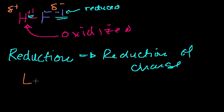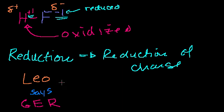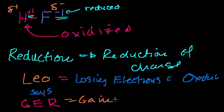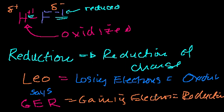Some textbooks give you a mnemonic: LEO the lion says GER. Losing electrons is equal to oxidation, and gaining electrons is equal to reduction. When you gain electrons you might wonder what's being reduced — what's getting reduced is your charge, because electrons are negative. You're gaining something with a negative charge, so your charge goes down. That's where the word reduction comes from.